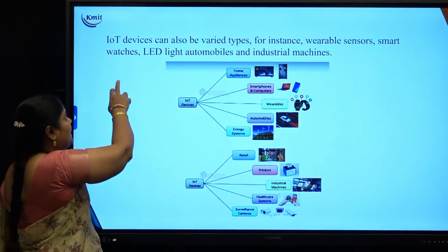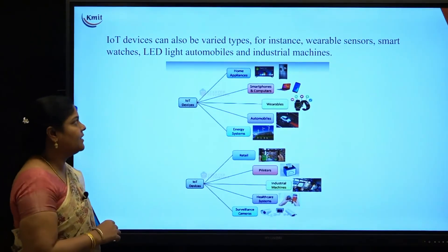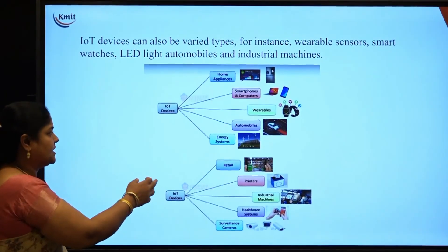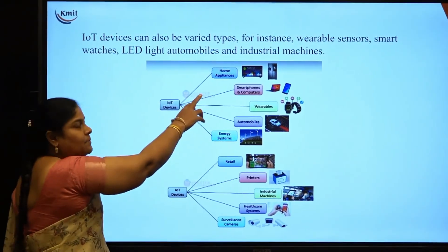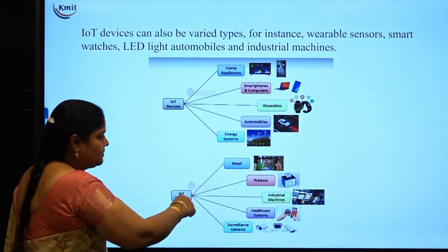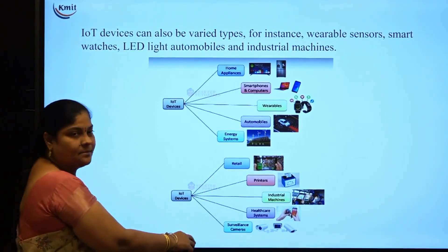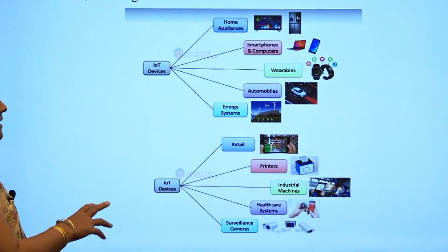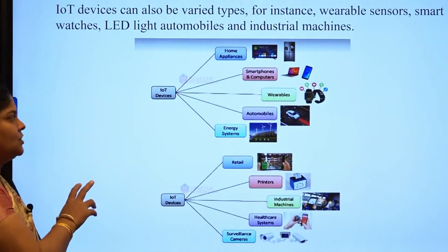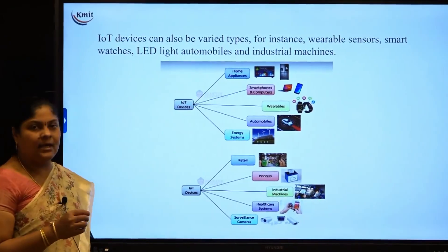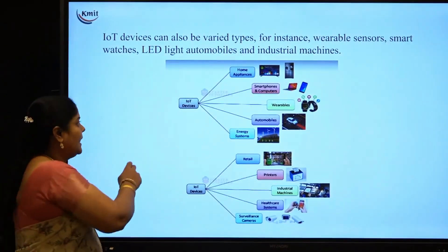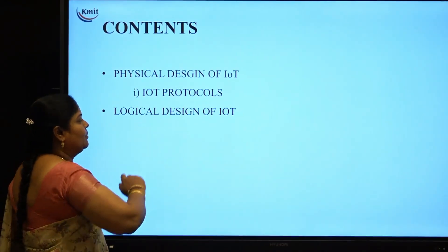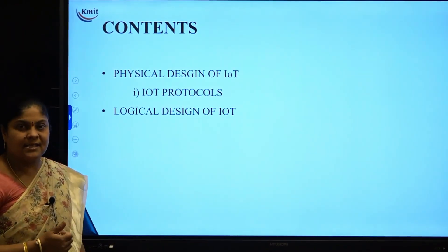The next topic is IoT devices. Different types of IoT devices are available, such as smart watches, automobile systems, energy systems, smart home appliances, smart retail appliances, smart printers, smart healthcare systems, and smart surveillance systems. With this, the topic of physical design of IoT is complete. The next topic — IoT protocols — will be covered in the next session.